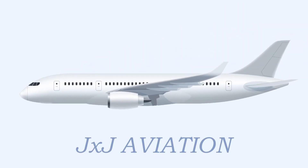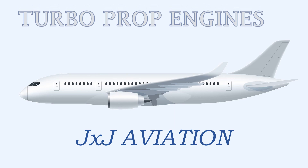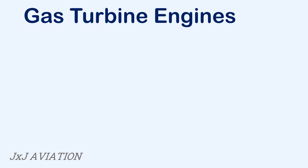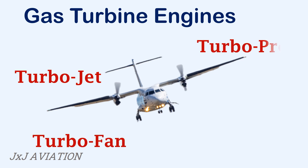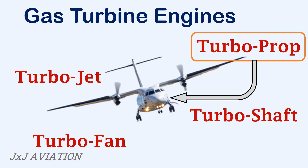Hello and welcome to JXJ Aviation. In this video we will be looking at the basics of turboprop engines. First let's take a look at the different types of gas turbine engines which can be installed on an aircraft: turbojet, turbofan, turboprop and turboshaft engines. In this video we will look at turboprop engines as shown on this aircraft. We will see how the thrust is created, the basic construction of a turboprop engine and why they are used on smaller short range aircraft.